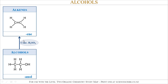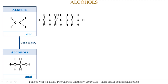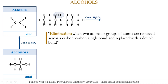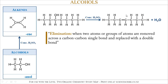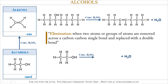Another reaction alcohols undergo is with concentrated sulfuric acid to form an alkene. Concentrated sulfuric acid is a dehydrating reagent; it eliminates OH and an H. An elimination reaction is when two atoms or groups of atoms are removed across a carbon-carbon single bond and replaced with a double bond. When OH and H are removed, water is formed, leaving two empty spaces which must be filled with a double bond between the two carbon atoms, since every carbon must have four bonds. In another example, removing OH and H from two adjacent carbon atoms again makes water — insert the double bond and tidy up the molecule.